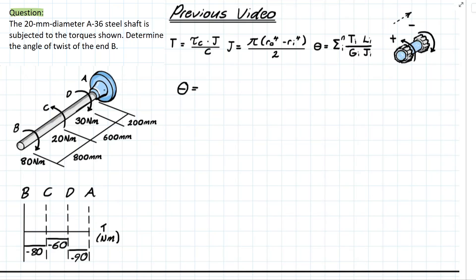So for our member G and J are going to be uniform throughout since it tells us that we have a 20 millimeter diameter and an A36 steel shaft meaning that both of these properties are going to remain the same throughout.